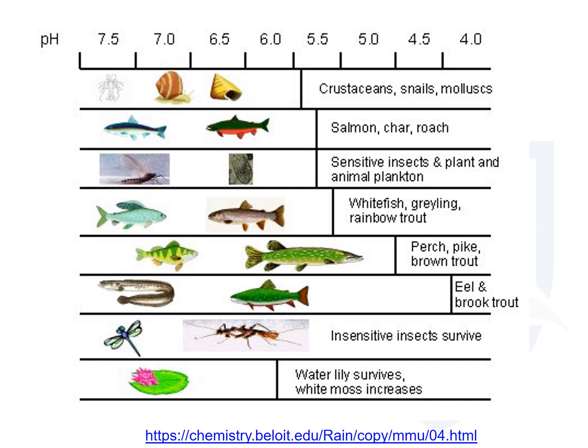Crustaceans and mollusks are among the more sensitive species to acid precipitation, and can be affected at a pH of about 5.8. Snails and mollusks have a calcium carbonate shell, and acid makes it harder for them to grow their shell — essentially dissolving it away. Other organisms are a little more tolerant. Whitefish, grayling, and rainbow trout can deal with around pH 5.3 or so. Perch, pike, brown trout, eel, and brook trout are even more tolerant. Sensitive insects are knocked out directly by acidity and can also be affected by aluminum toxicity.